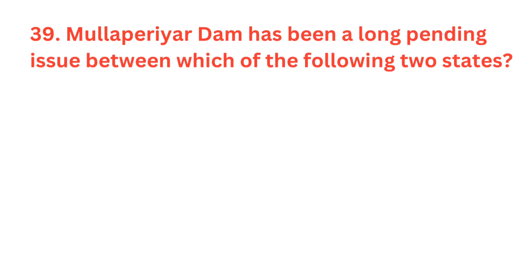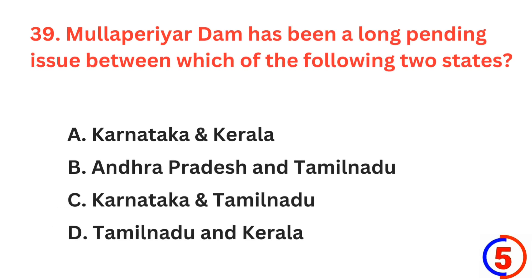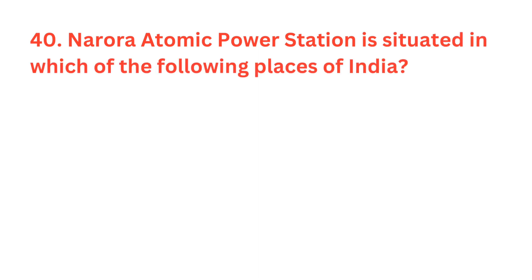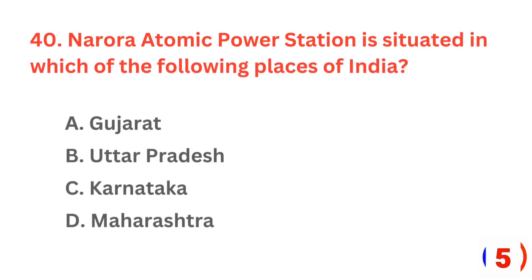Mullaperiyar Dam has been a long pending issue between which of the following two states? The right answer is option D, Tamil Nadu and Kerala. Narora Atomic Power Station is situated in which of the following places of India? The correct answer is option B, Uttar Pradesh.